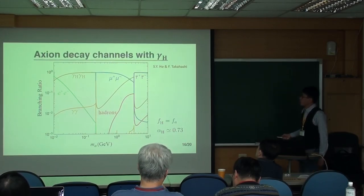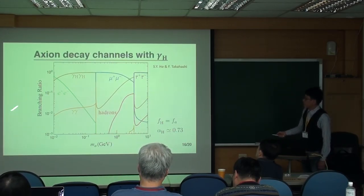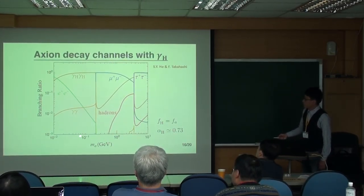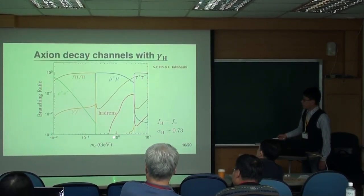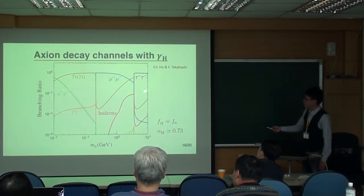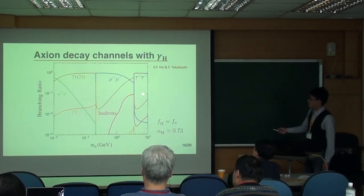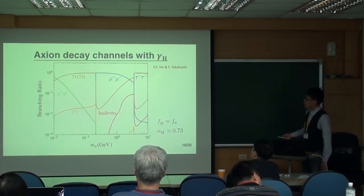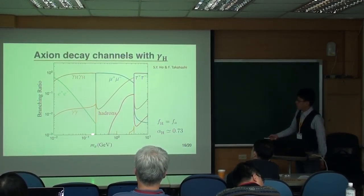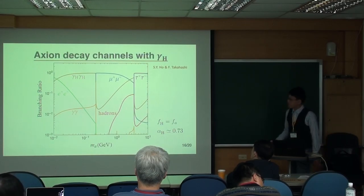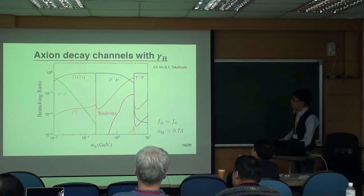So once you introduce the hidden photon, as you can see from this graph, in the middle range, in the high mass region, the axion is still decaying to muons and photons. However, in the low mass region, the axion is decaying to the hidden photon.